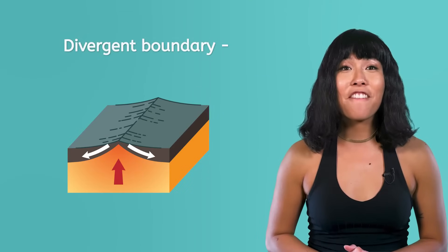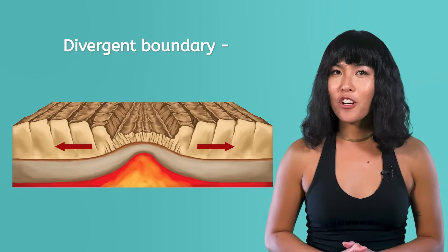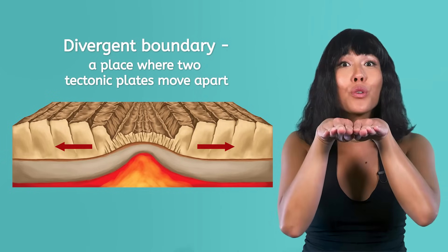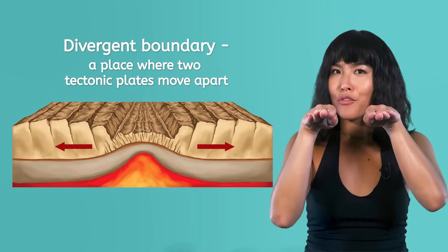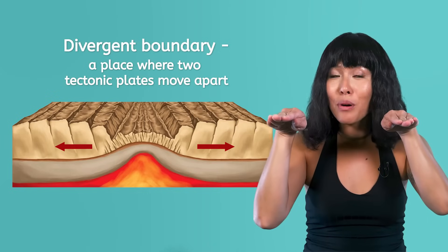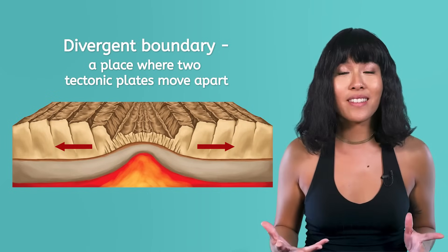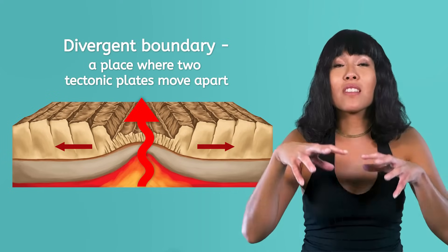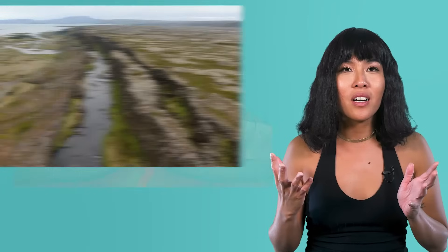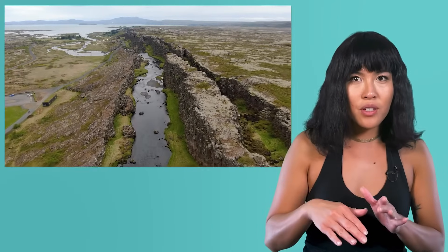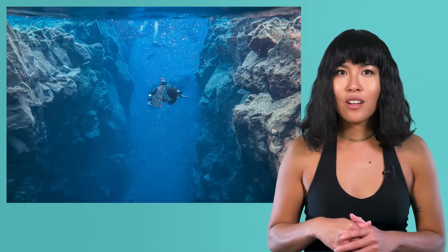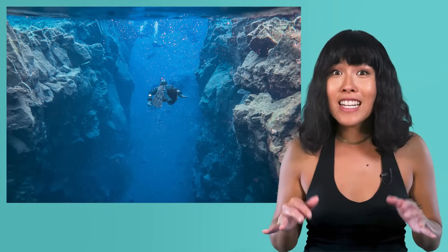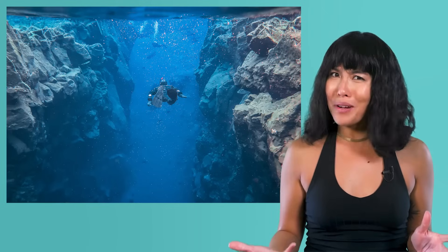The first is called a divergent boundary. Diverge is another word for separate, so a divergent boundary is a place where two tectonic plates are moving apart from each other. As they pull apart, the movement often causes earthquakes and creates areas where molten rock from the Earth's mantle can rise to the surface in volcanoes. Over time, water rushes in to fill the new gap in Earth's crust. In fact, there's a place in Iceland where you can swim between two tectonic plates in a divergent boundary. Pretty amazing, huh?